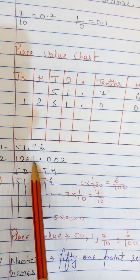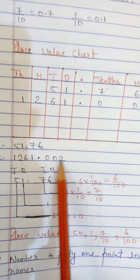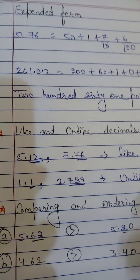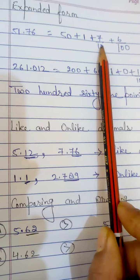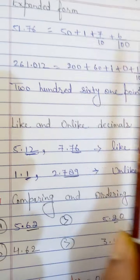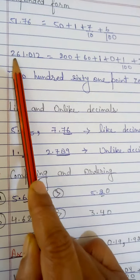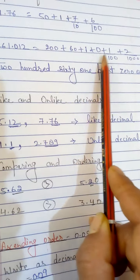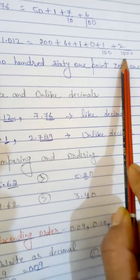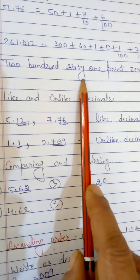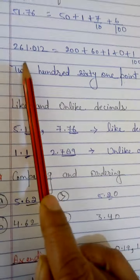Now let's see the expanded form. For 51.76: write fifty plus one plus seven upon ten plus six upon hundred, because seven is in the tenths place and six is in the hundredths place. For 261.012: write two hundred plus sixty plus one plus zero upon ten plus one upon hundred plus two upon thousand. So that is two hundred sixty-one point zero one two.